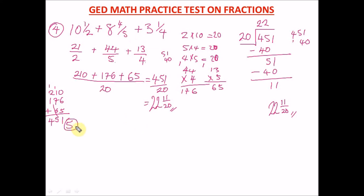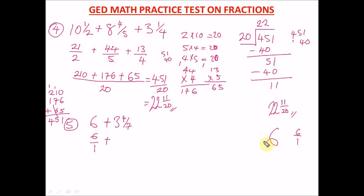Question five: 6 whole number plus 3 and 4 over 7. We convert these to improper fractions. A whole number like 6 is the same as 6 over 1 — that's how you convert a whole number to a fraction. For 3 and 4 over 7: 7 times 3 is 21, plus 4 is 25 over 7.